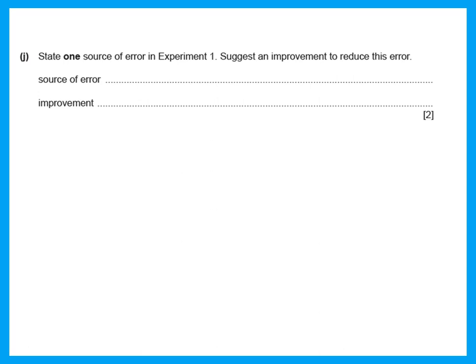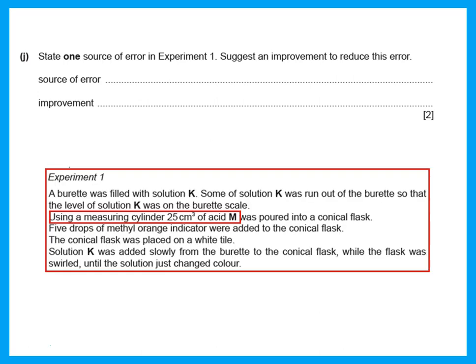State one source of error in experiment one and suggest an improvement. A measuring cylinder was used to measure 25 cm³ of acid. When doing titrations, what you put into the conical flask should be measured using a pipette, not a measuring cylinder.